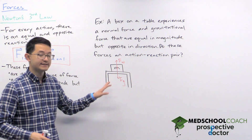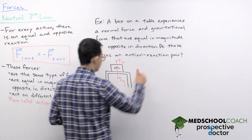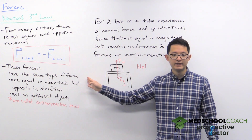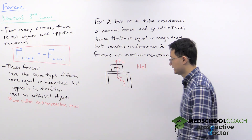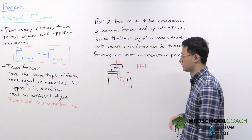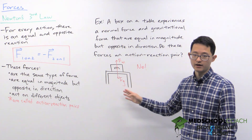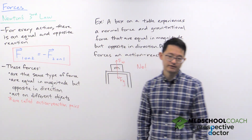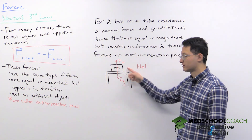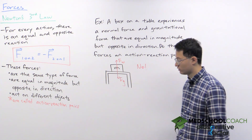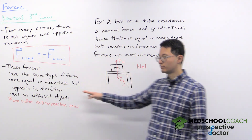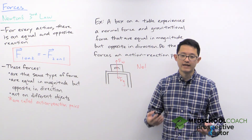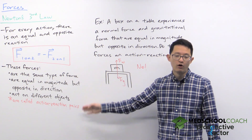The answer is no. Looking at our requirements — requirement number one, the forces have to be the same type of force. Here we have a normal force and a gravitational force; those are different types, so that fails. Requirement three: the forces have to act on different objects, but both of these forces act on the box. So while it's true that these forces are equal in magnitude and opposite in direction, that's not the only requirement. You must fulfill all three requirements for an action-reaction pair.